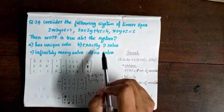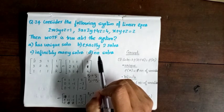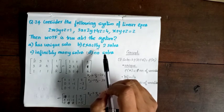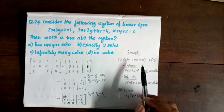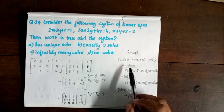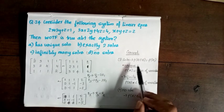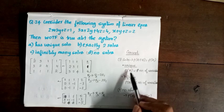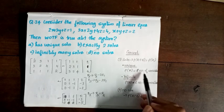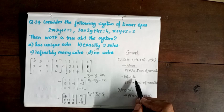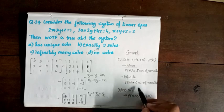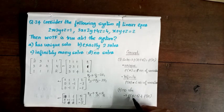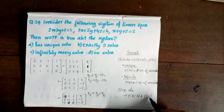To analyze the system, recall: a solution exists if rank of augmented matrix [A|B] equals rank of A; a unique solution exists if rank of A equals the number of variables; infinitely many solutions exist if rank of A is less than the number of variables; no solution exists if rank of [A|B] ≠ rank of A.